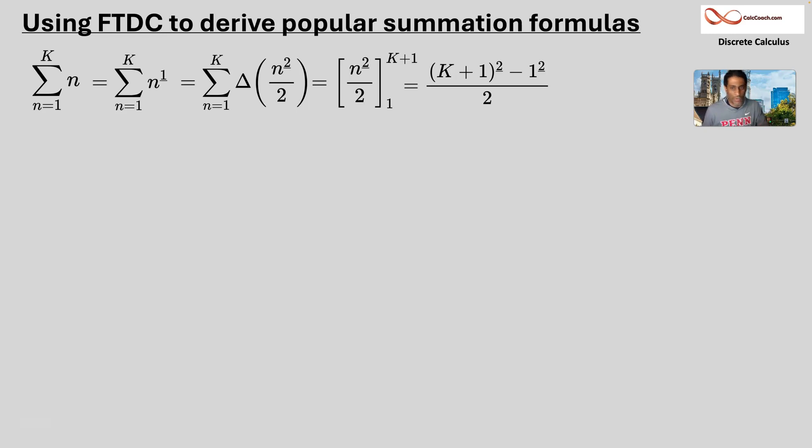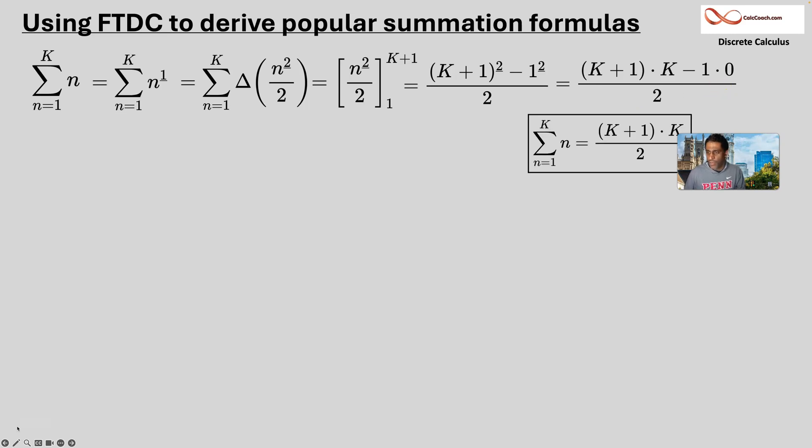But one falling two is zero. And what is k plus one falling two? That's k plus one times k. And that's it. That's your formula.